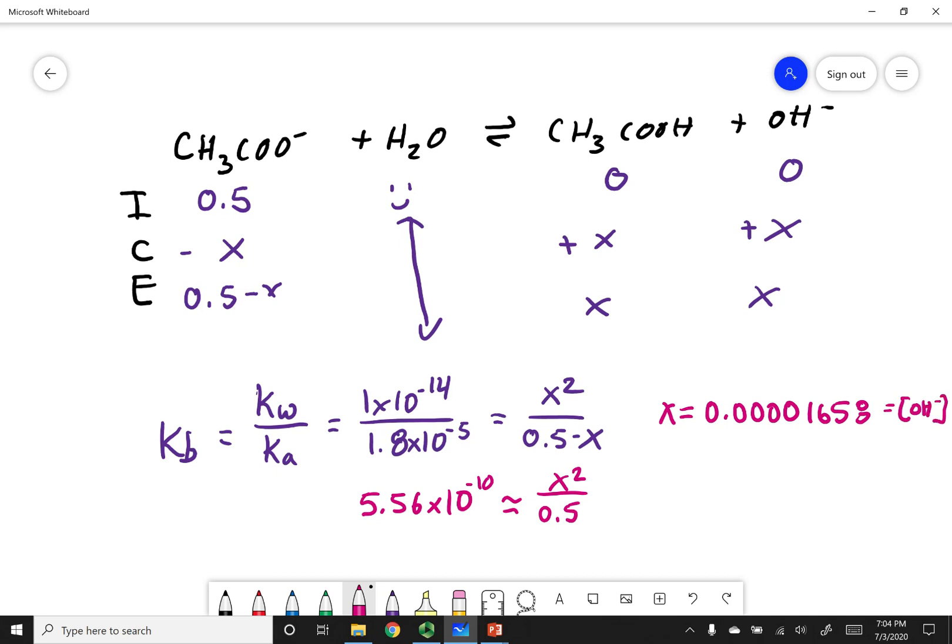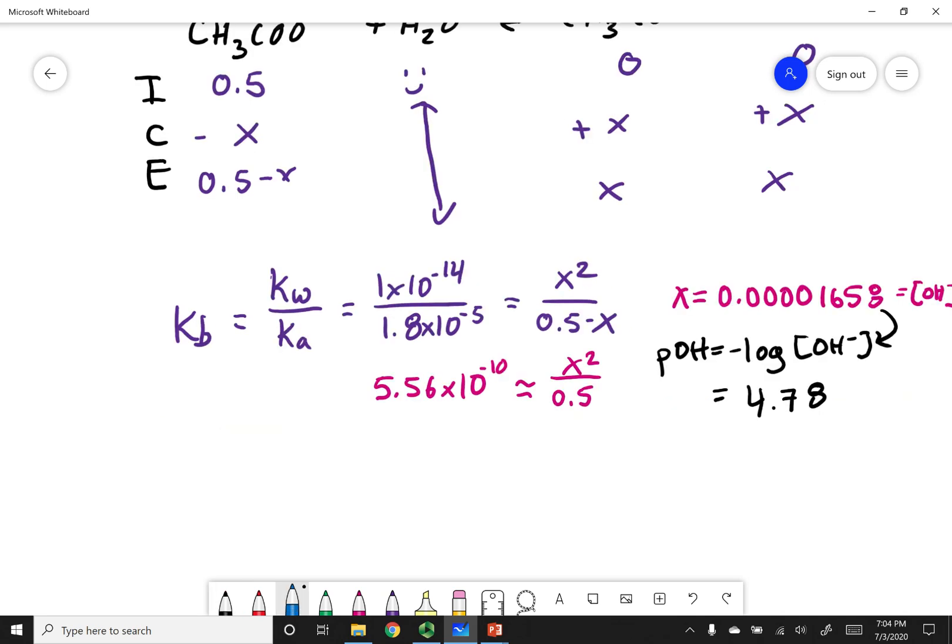But remember what this X equals. This equals my OH minus concentration. So what I can do is I can take the negative log of this. The negative log of this is going to be my POH. So I can just plug this value in. And then I get a POH of 4.78. So the last thing I want to do is I want to calculate pH. And pH is going to be 14 minus my POH. Or in this case, 14 minus 4.78, which gets me a pH of 9.22.